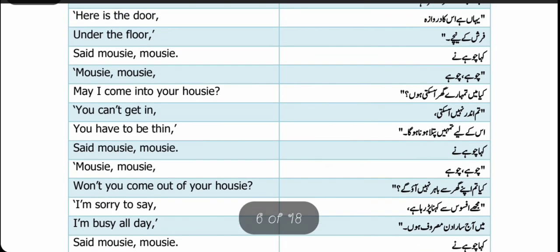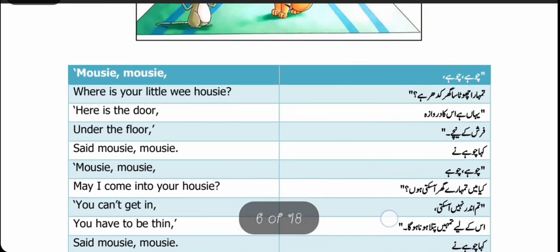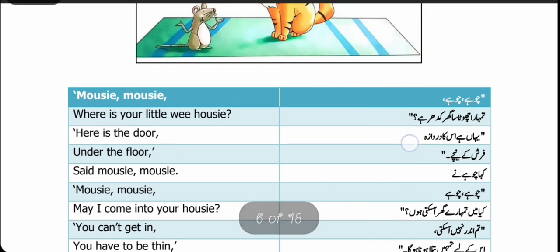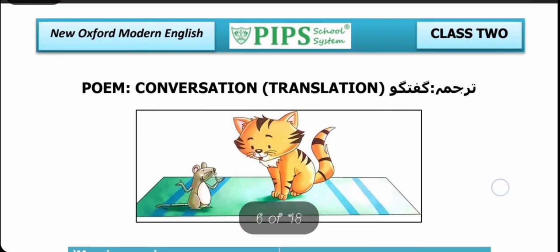ان لائنوں میں بلی چوہے سے کہتی ہے کہ میں گھر کے اندر نہیں آ سکتی تو کیا تم گھر کے باہر آ سکتے ہو؟ تو چوہا بہت چالاکی سے بلی کی چالاکی کو سمجھتا ہے students، اور وہ اسی چالاکی سے جواب دیتا ہے کہ نہیں، میں آج سارا دن مصروف ہوں — میں بلی سے باہر نہیں آ سکتا۔ جی students، تو کیسی لگی آپ کو یہ point؟